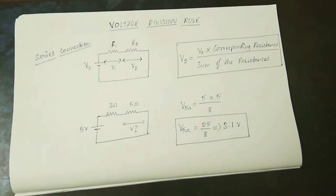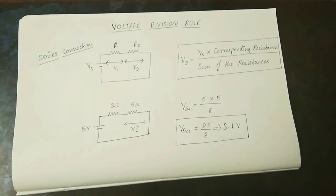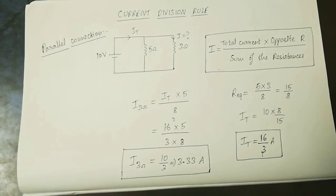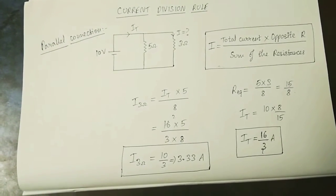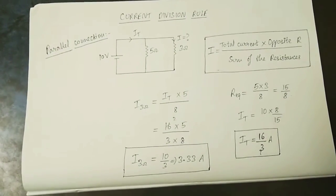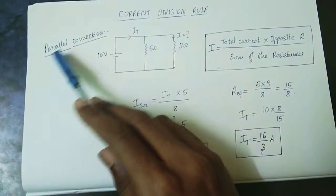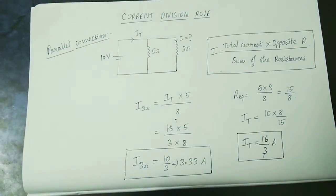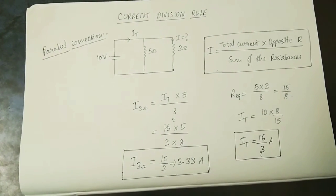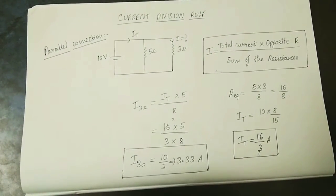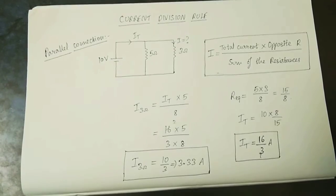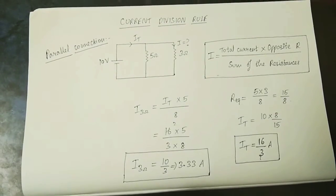This is the current division rule. The current division rule is the opposite of the voltage division rule. It applies to a parallel connection.